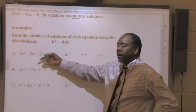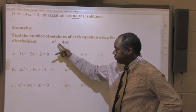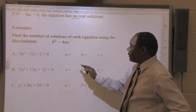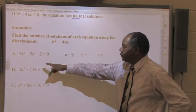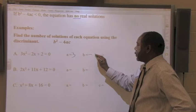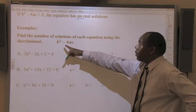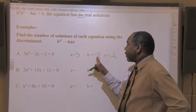So the first thing you want to do is make sure it's in standard form. These all are. And I want to identify my A, B, and C values. A is 3, B is negative 2, and C is 2.